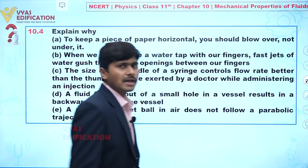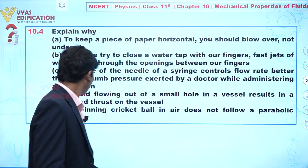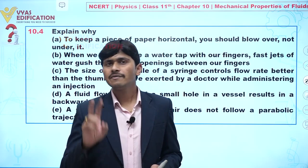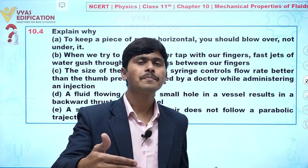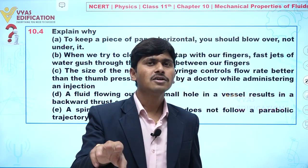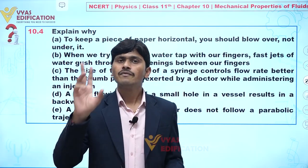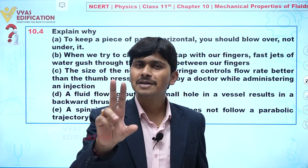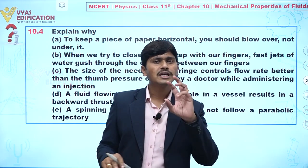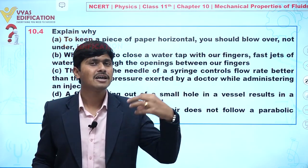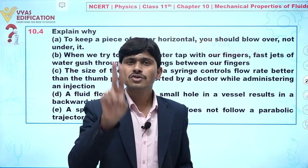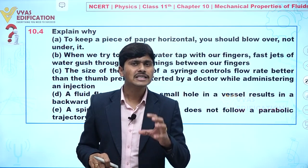For part (e): a spinning cricket ball in air does not follow a parabolic trajectory. When a fast bowler bowls, if the ball is thrown directly without spin it follows a parabolic path. But when the bowler releases the ball, they give a twist to it. Due to this twist, one part of the ball gains lower velocity compared to the other part, creating a pressure difference.